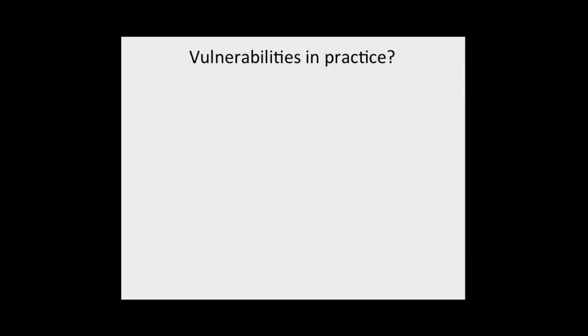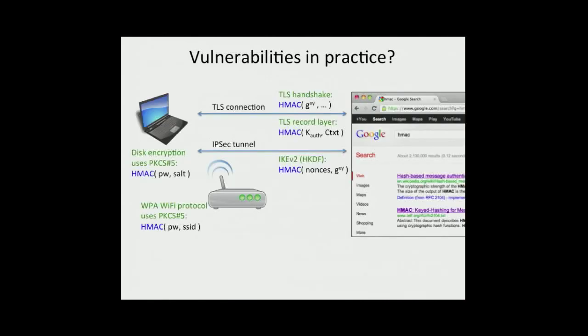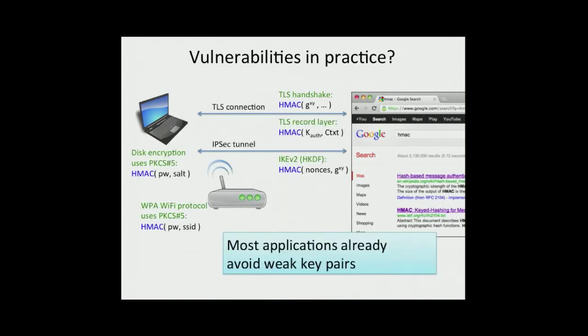We were concerned that there were vulnerabilities in practice, particularly with HMAC, but it seems fortuitously that most applications avoid weak key pairs naturally. From my informal analysis of many of these applications, these all seem fine. With settings where you're using variable-length keys, colliding key pairs might be an issue, but as far as we're aware, no actual tools are in danger. But certainly HMAC is used all over the place, and it would be good to be aware of weak key pairs moving forward.